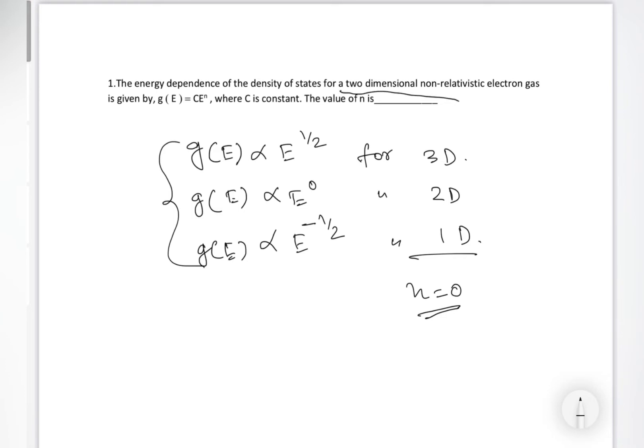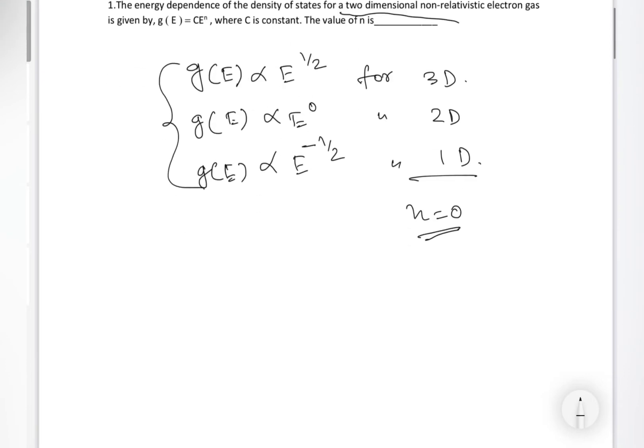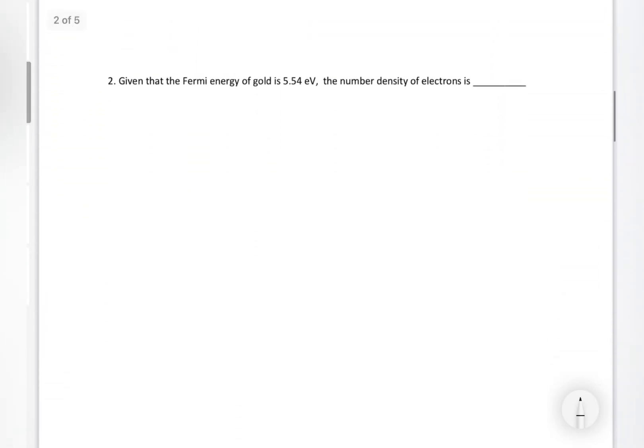The answer will be n=0 for this question because they are saying for two-dimensional system. Then the next problem. Given that Fermi energy of gold is 5.454 electron volt, the number density of electrons is?